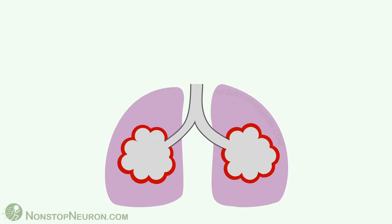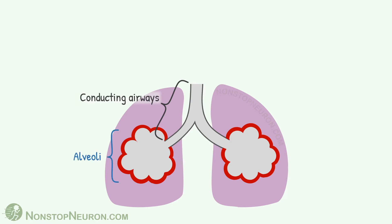This is a simplified diagram of the lung. This part represents the conducting airway — the passage from the nose and lips to just before the alveoli. This part does not participate in gas exchange. These are alveoli, and these are pulmonary capillaries supplying the alveoli. Alveoli participate in gas exchange.